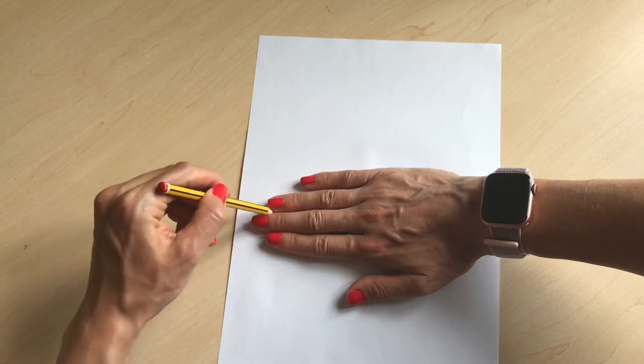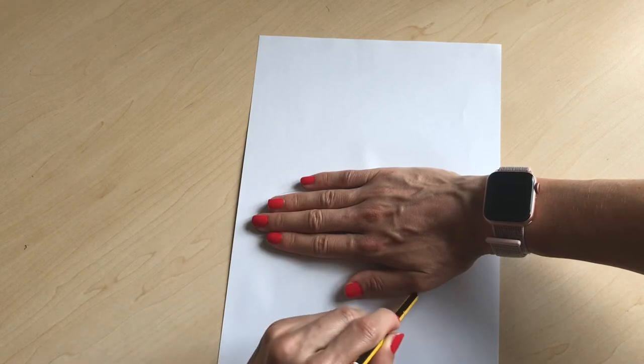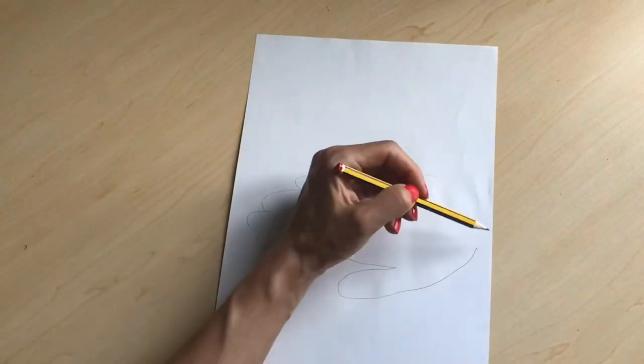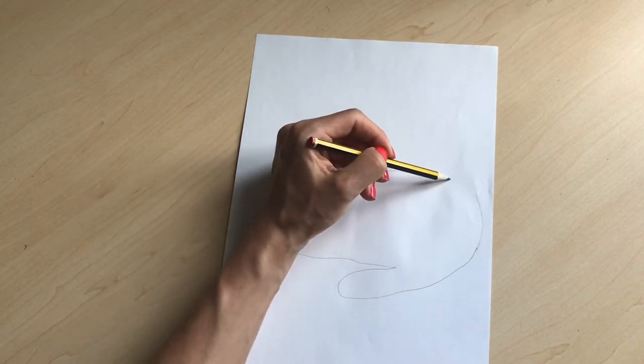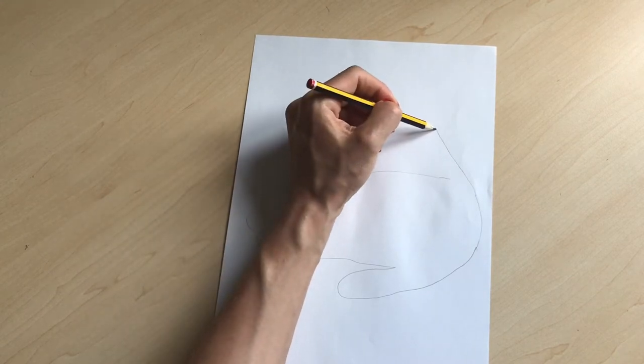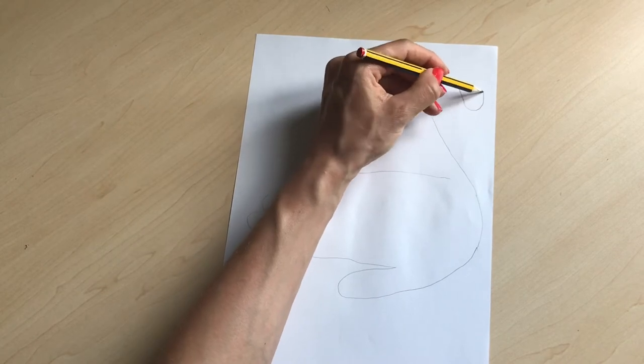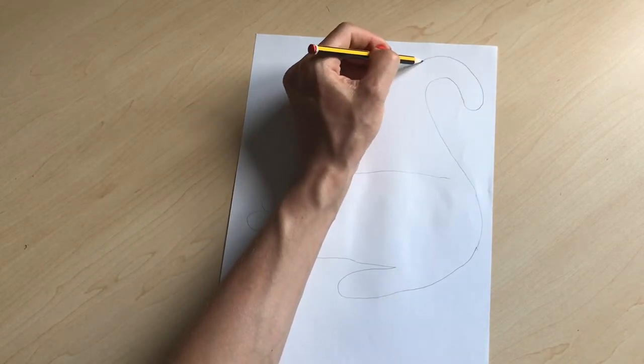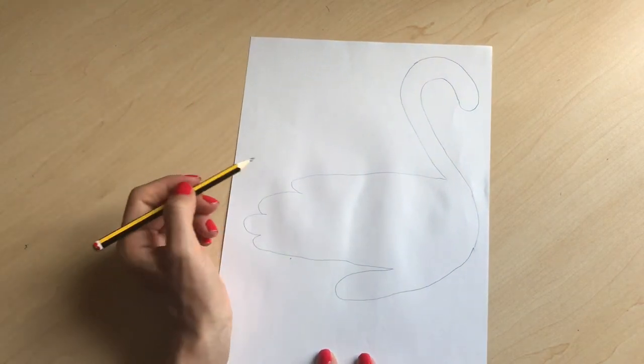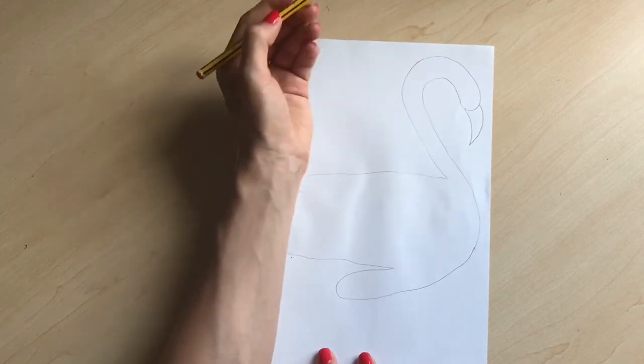This is creating the body of the flamingo. It should look like that. Then bring it round to do that long neck and curve around so it's like half of a heart. You can straighten it up when finished and add a beak like that and an eye. It's super easy.